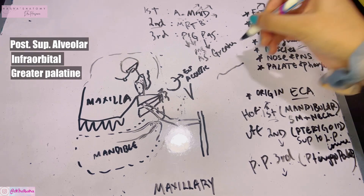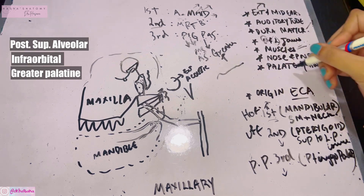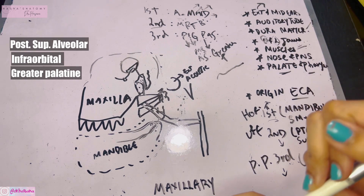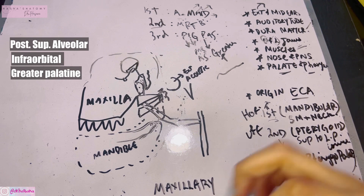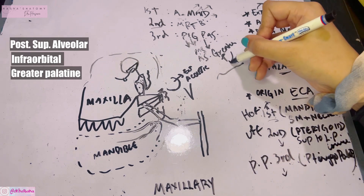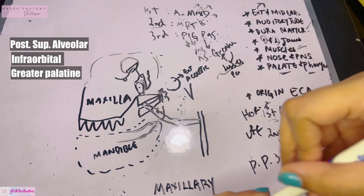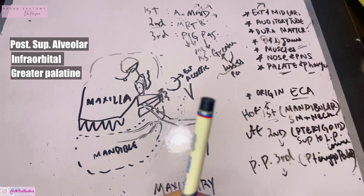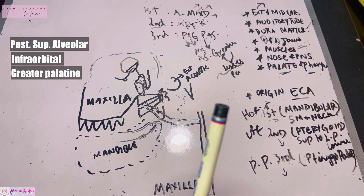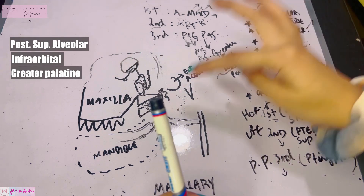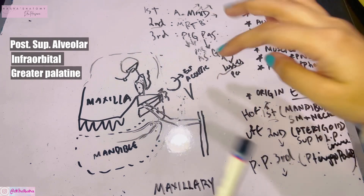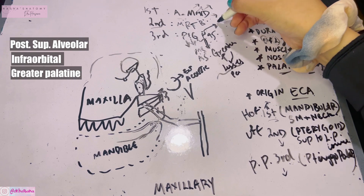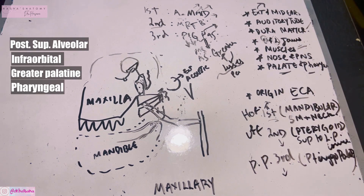G is for the greater palatine artery. It gives off the lesser palatine arteries, supplies the entire hard palate, and also supplies the soft palate along with the tonsil. P is for the pharyngeal branch, which runs in the pharyngeal canal of the pterygopalatine fossa and supplies the pharynx.